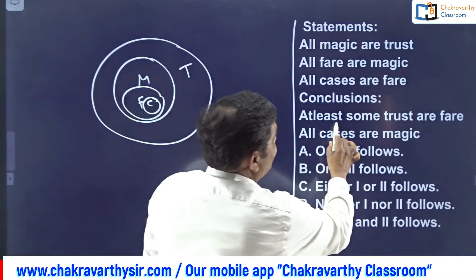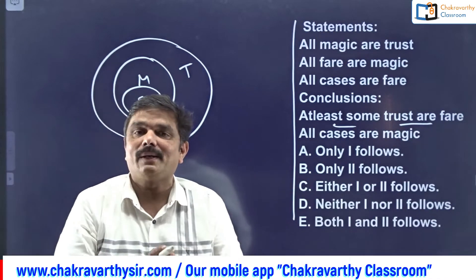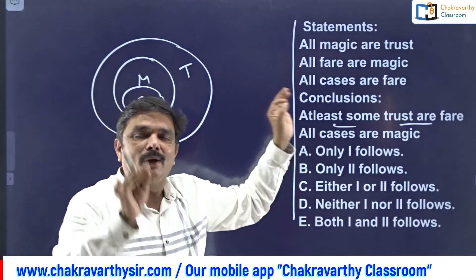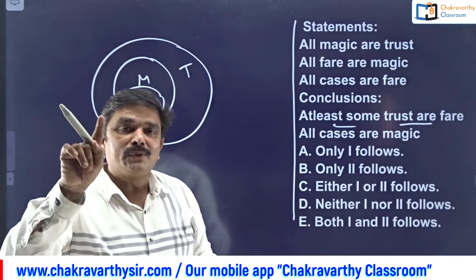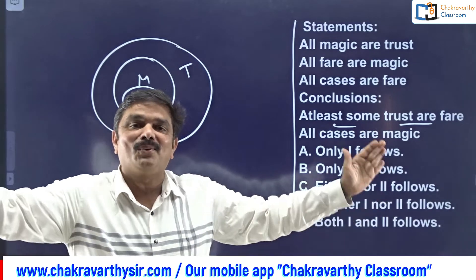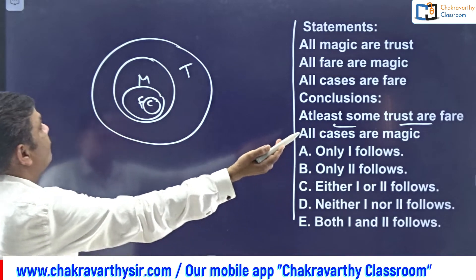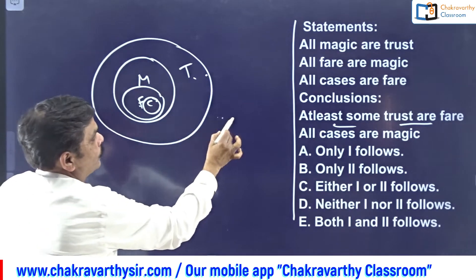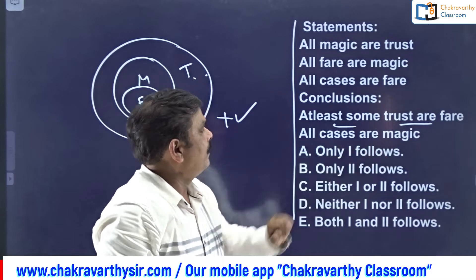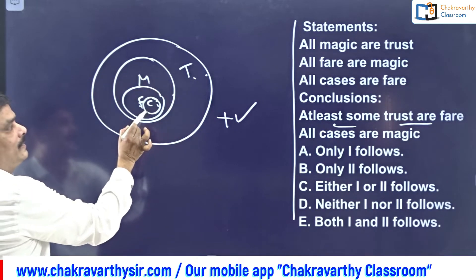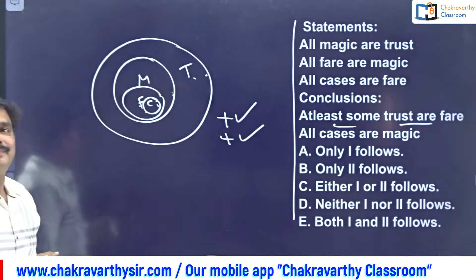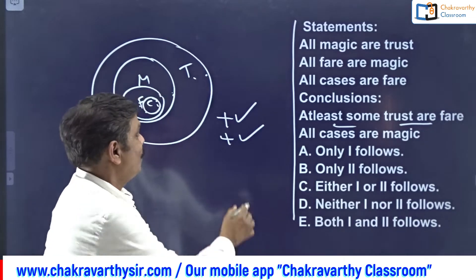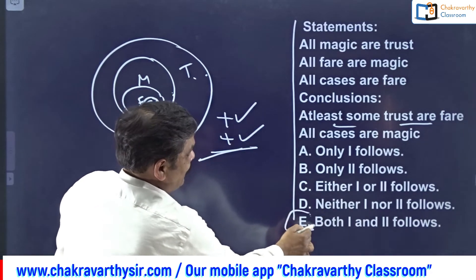First conclusion: at least some trusts are fair - you can say it is right blindly without writing anything on paper. When all given statements are positive, positive conclusions will definitely be true in the basic diagram, and once one positive conclusion is valid it is always right. Some trusts are fair is right. Second conclusion: all cases are magnetic - cases is a subset of magnetic, positive and right. Both positive conclusions are right, so the answer is option E.